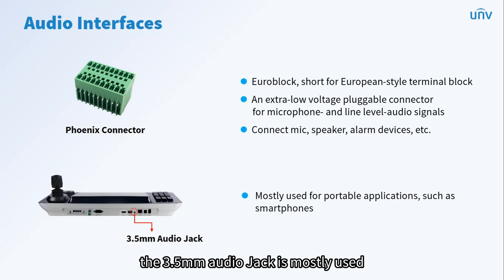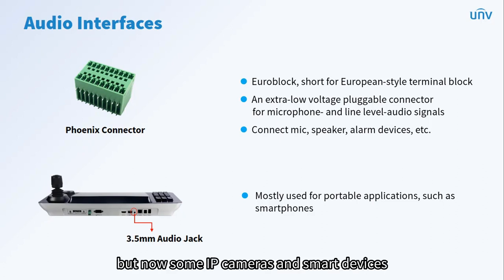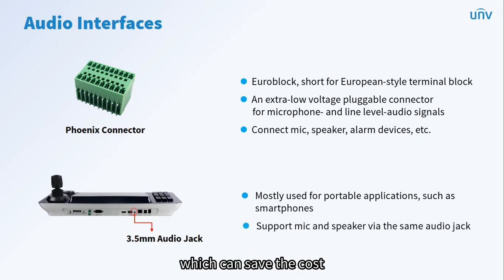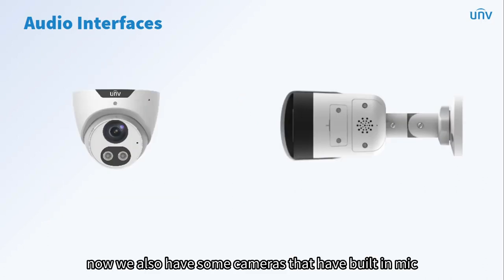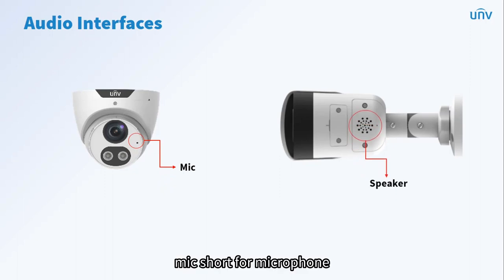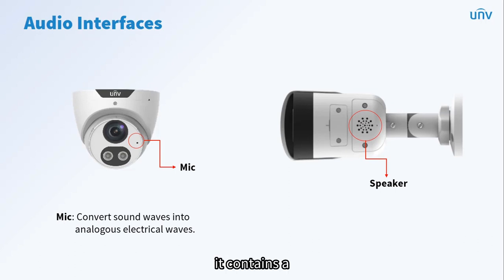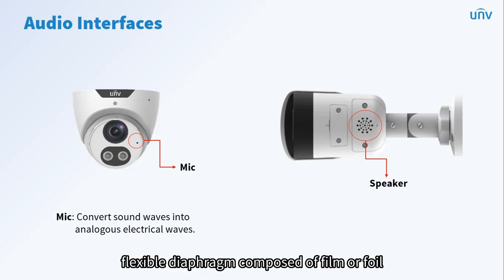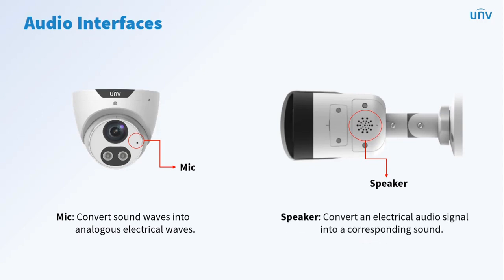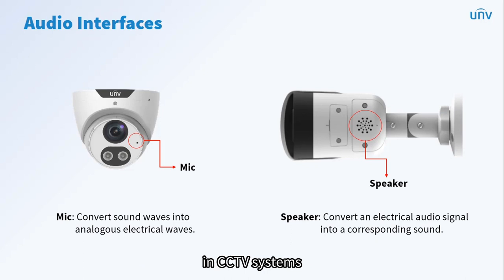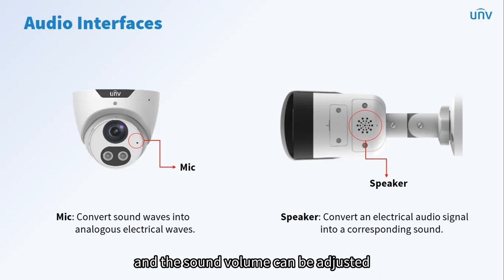The 3.5mm audio jack is mostly used for portable applications such as smartphones, but now some IP cameras and smart devices have also adopted this audio jack as it supports audio in and out over the same port, which can save cost. Some cameras also have built-in mic and speaker. A mic — short for microphone — converts sound waves into analogous electrical waves, containing a flexible diaphragm that vibrates on contact with sound. A speaker converts an electrical audio signal into corresponding sound. In CCTV systems, a speaker refers to the device that plays sound picked up by the camera's mic, and the sound volume can be adjusted.